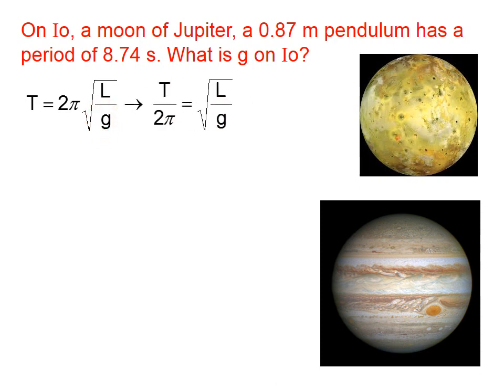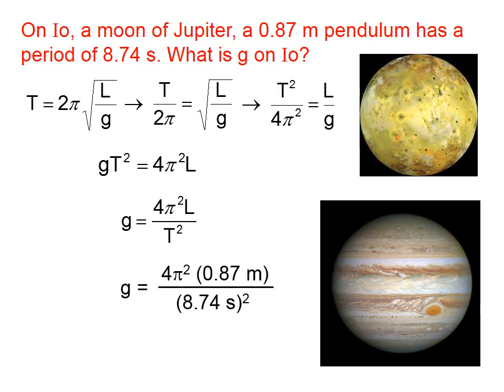So, let's divide both sides by 2π. Let's square both sides to get rid of the square root sign. Let's cross multiply to get rid of all the denominators. And now we're going to divide by T², such that g is by itself, and all the other variables are on the right side of the equation.